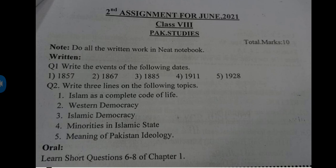No extra information is required for question one. Question number two is: write three lines on the following topics — number one, Islam as a complete code of life; number two, western democracy; number three, Islamic democracy; number four, minorities in Islamic state; number five, meaning of Pakistan ideology. All these headings are already available in your books and notes, except western democracy, which you will search on the internet and write only three lines on each topic.